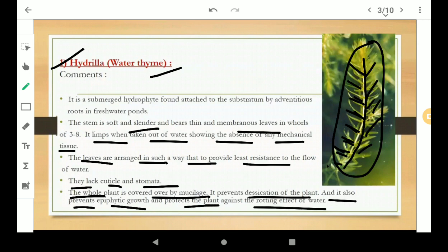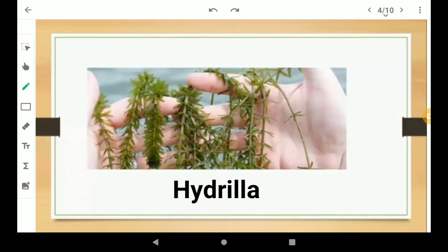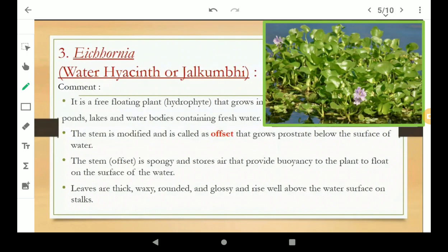And it protects the plants against the rotting effect of water. Rotting generally means decay by the action of fungi or bacteria. So this is the example, this is the picture of Hydrilla. Now we will be talking about Eichhornia.